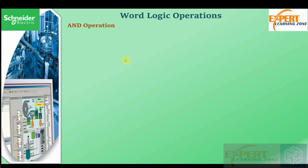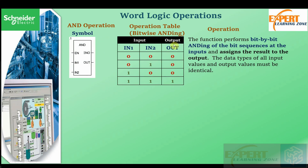We are going to begin with the AND operation. The AND operation performs a bit-by-bit AND on a sequence of data in the two inputs and assigns the result to the output. Here we have two inputs, so bit-by-bit AND-ing is done on those two inputs and the result is assigned to the output. This is the truth table for the AND operation — the output is 1 if and only if both inputs are 1, otherwise it is 0.